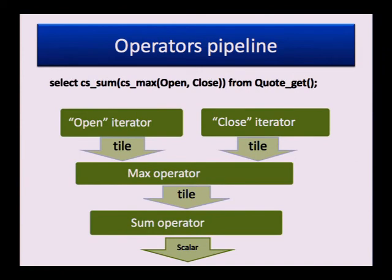The max operator is implemented as a plain C loop which iterates through 100 elements and finds the maximum. The same is true for most other IMCS operations. For addition, there is a plain C loop which takes one vector and another vector and adds their elements. This is why the C compiler is able to execute this code very efficiently and we pay no cost for interpreting the query.